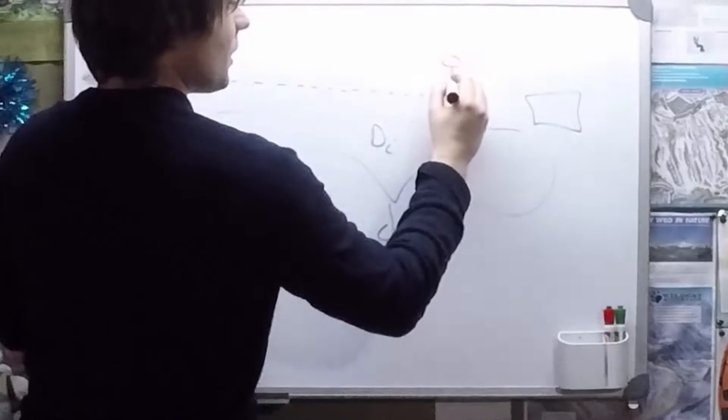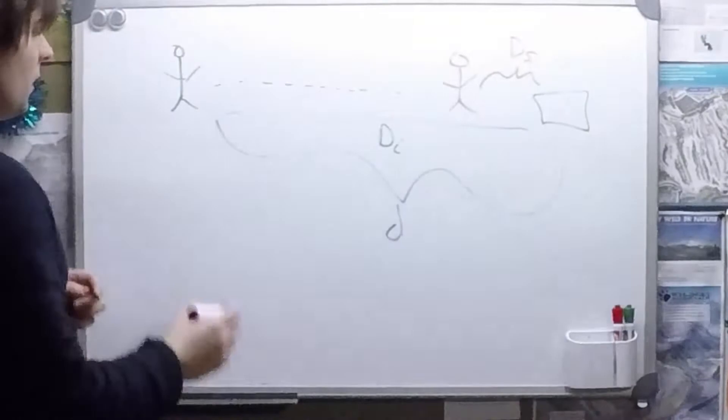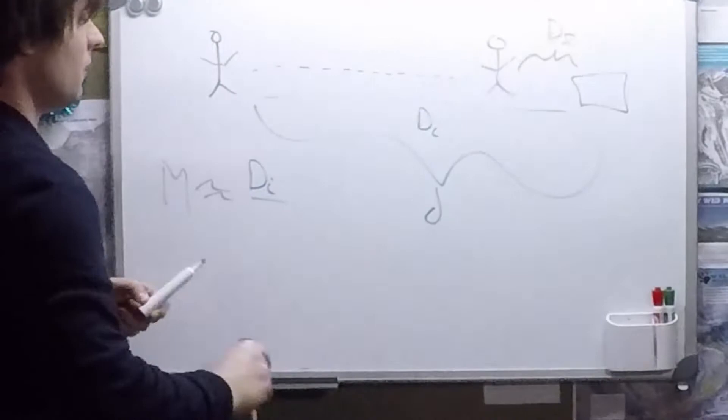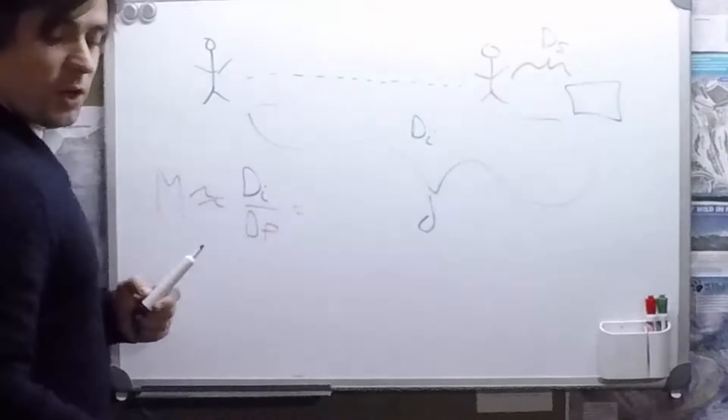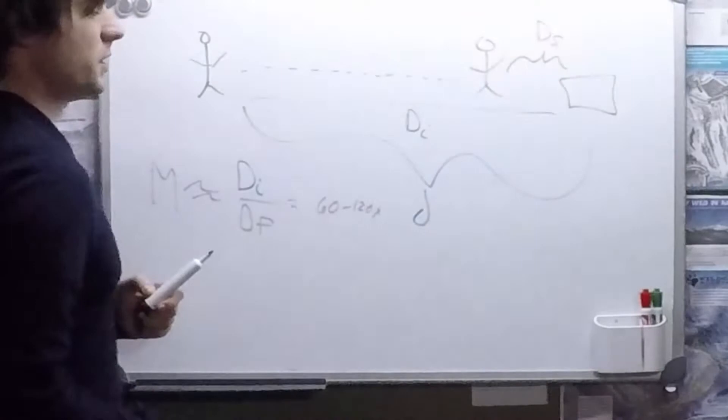Keep going until you get close enough to that object where it looks about the same. And then you want to measure that distance, and that's your final distance. We can approximate the magnification of the telescope by saying the initial distance divided by the final distance. And that will give us our magnification. In our telescope, it should be between 60 to 120 times magnification.